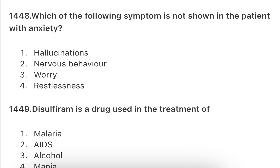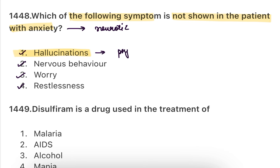Next: Which of the following symptoms is NOT shown in a patient with anxiety? Options: hallucination, nervous behaviour, worry, or restlessness. Hallucination is not seen in anxiety patients. Anxiety is a neurotic disorder, and hallucinations are mostly seen in psychotic disorders. In neurotic disorders, hallucinations and illusions are not present. Hallucination is a disorder of perception in which the patient's perception is severely weakened.